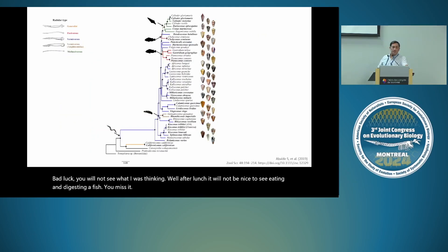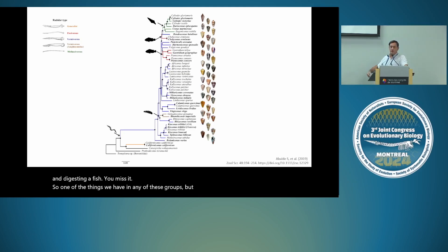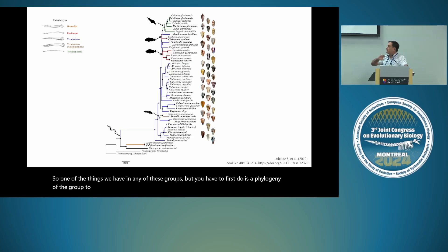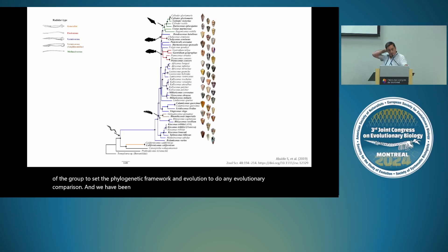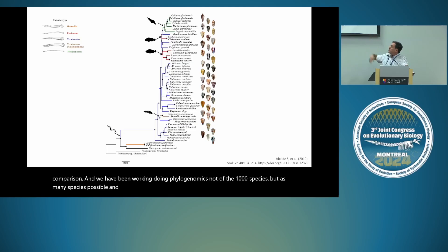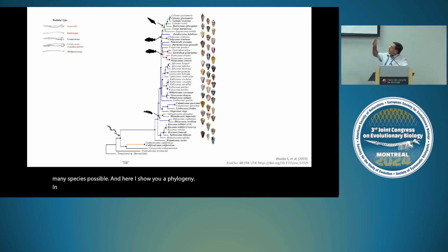One of the things we have to first do in any of these groups is a phylogeny to set the phylogenetic framework for evolutionary comparison. We have been doing phylogenomics of as many species as possible, and here I show you a phylogeny in which we have made an ancestral character reconstruction of the diet.